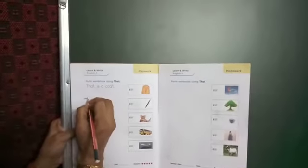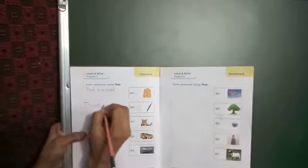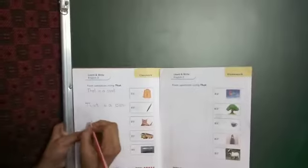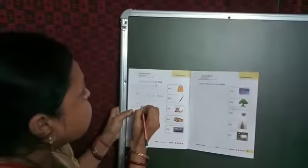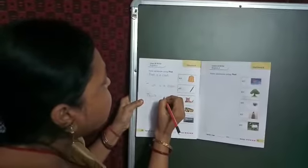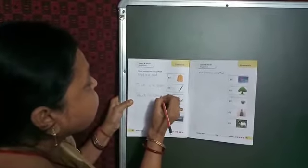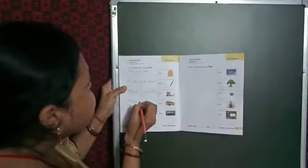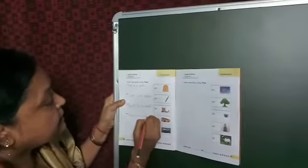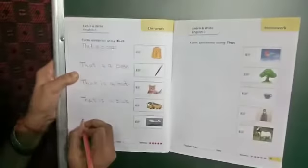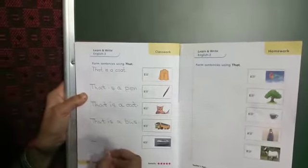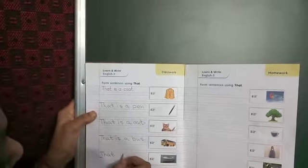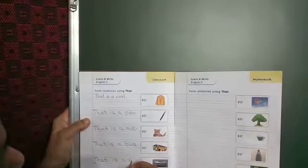Second picture is that is a pet. Third picture is that is a cat. Fourth picture is that is a bus. Fifth picture is that is a ship.